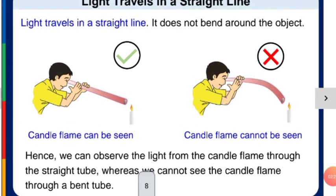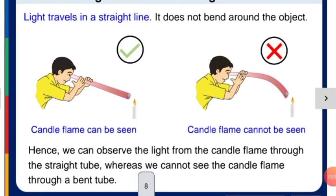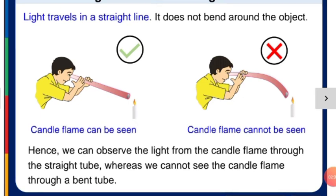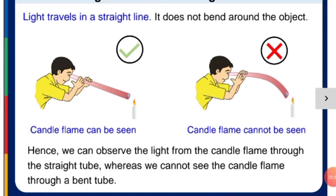Light travels in a straight line. It does not bend around the object. Light will not bend around the object—this is very clear to us.